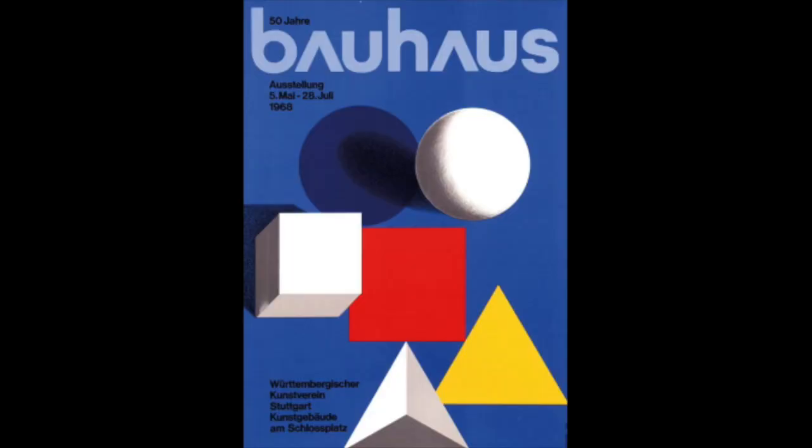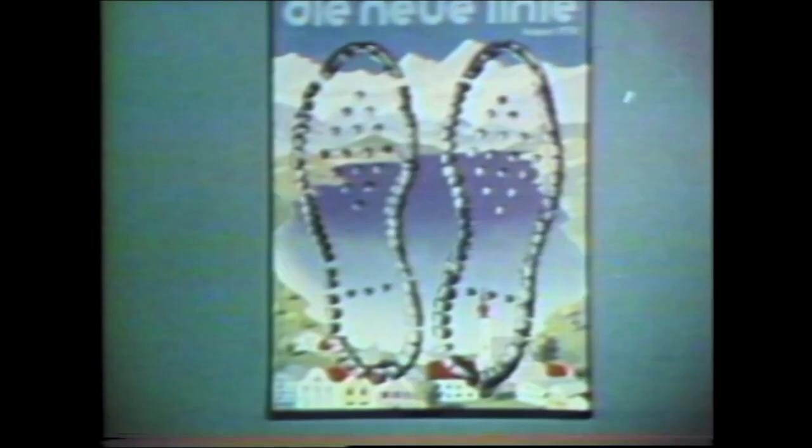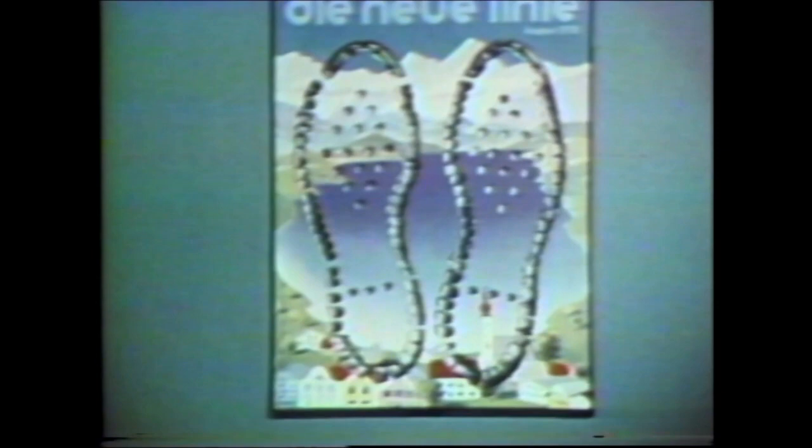This example of the Bauhaus poster clearly shows the use of primary colours and pure form. The type used is a type that can be accessed by all regardless of status, race, or nationality, thus linking to all the principles of universality.